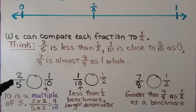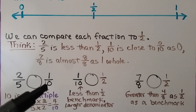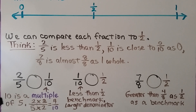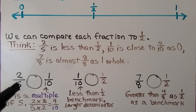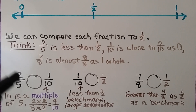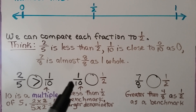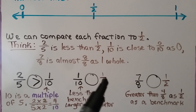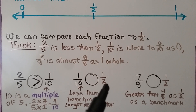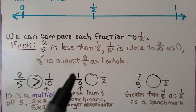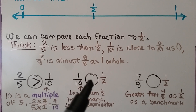We think: ten is a multiple of five, so if we multiply the denominator by two and the numerator by two, we get four-tenths. So we can compare four-tenths to one-tenth, and four-tenths would be greater. One-tenth is close to zero-tenths. We can compare it to the benchmark half — we know five-tenths would be half, so one-tenth is less than half.